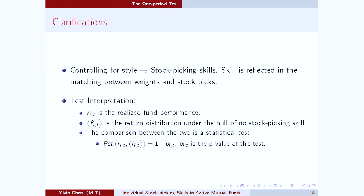Let me elaborate on this point. On the one hand, we have the investor's actual performance. Whereas on the other hand, we have a return distribution coming from the null hypothesis of no stock picking skills. The comparison between the actual realization versus the null distribution constitutes a statistical test. Specifically, the ranking of the investor among the monkeys is just 1 minus the p-value of the statistical test on the investor's stock picking skills, even in a single period.